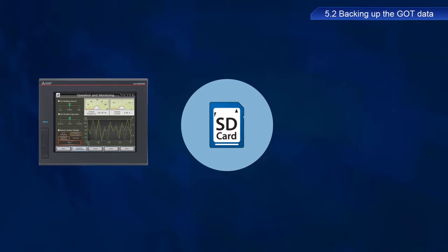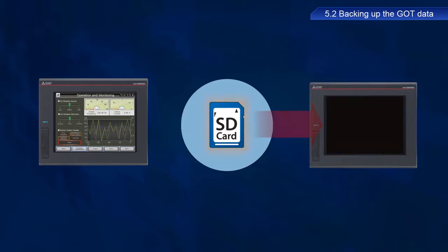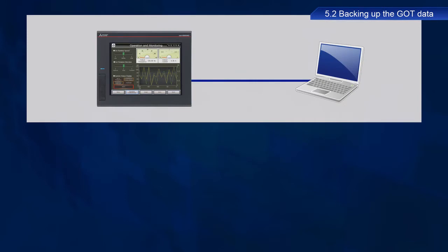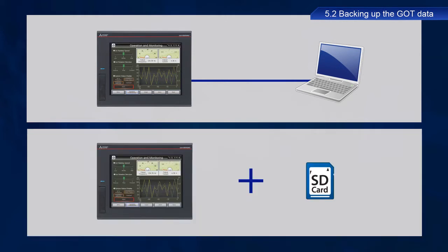Backing up data means storing copies of data on other media in case of device failure or other circumstances. If data backups are available, devices can be restored to the previous working state quickly and downtime can be minimized. GOT data can be backed up in two ways: by connecting with a personal computer, or by using an SD card.